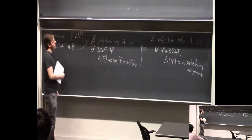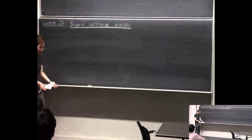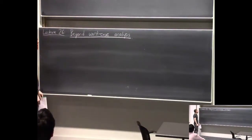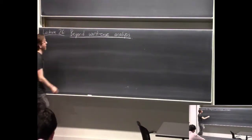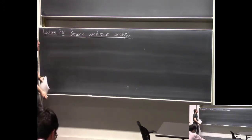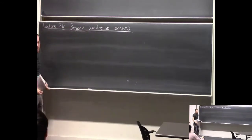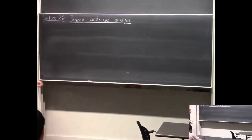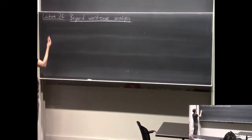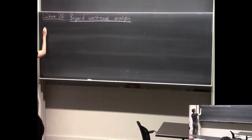Since we're assuming P does not equal NP in this lecture, these algorithms do not exist. And therefore we are sad. So what should we do? Well, if we're sad, we can try to make ourselves happy. There are various ways you could try to relax your goals.